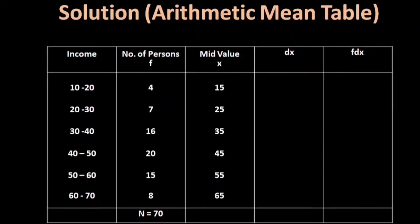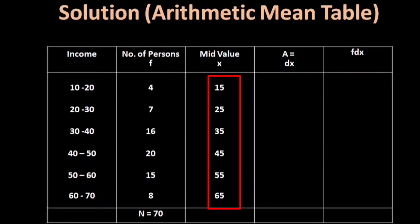The DX calculation is very important. DX stands for the deviation of items from the assumed mean. A is the assumed mean. The middle values are 15, 25, 35, 45, 55, 65.